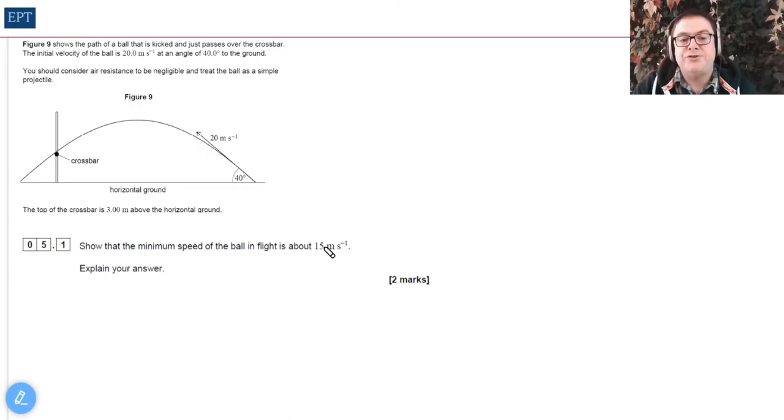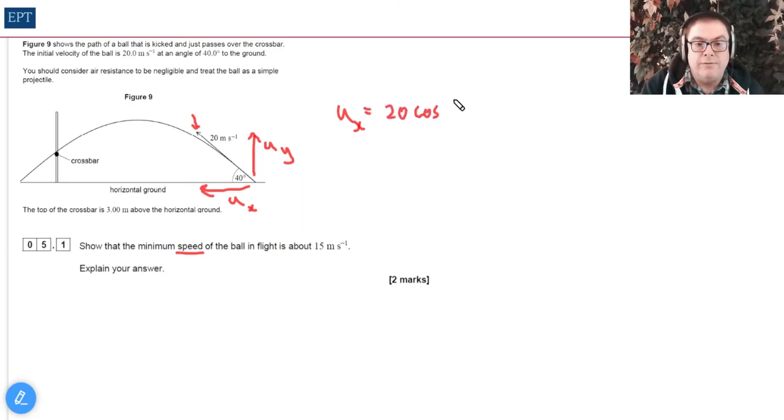Your first task is to show that the minimum speed of the ball is about 15 meters per second. The way to do this is to consider breaking down its initial velocity into its two components: its y component and its x component. Let's call that uy and ux. Now ux is the adjacent to the hypotenuse, 20 being the hypotenuse, therefore ux = 20 cos 40°, and uy = 20 sin 40°.